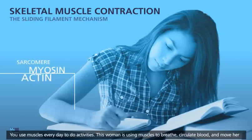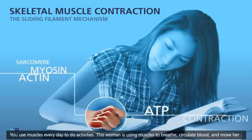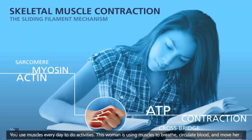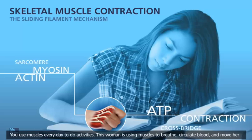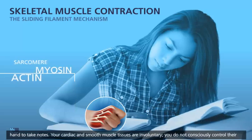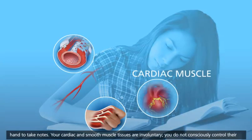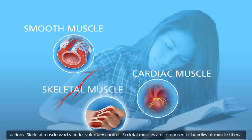You use muscles every day to do activities. This woman is using muscles to breathe, circulate blood, and move her hand to take notes. Your cardiac and smooth muscle tissues are involuntary — you do not consciously control their actions. Skeletal muscle, however, works under voluntary control.